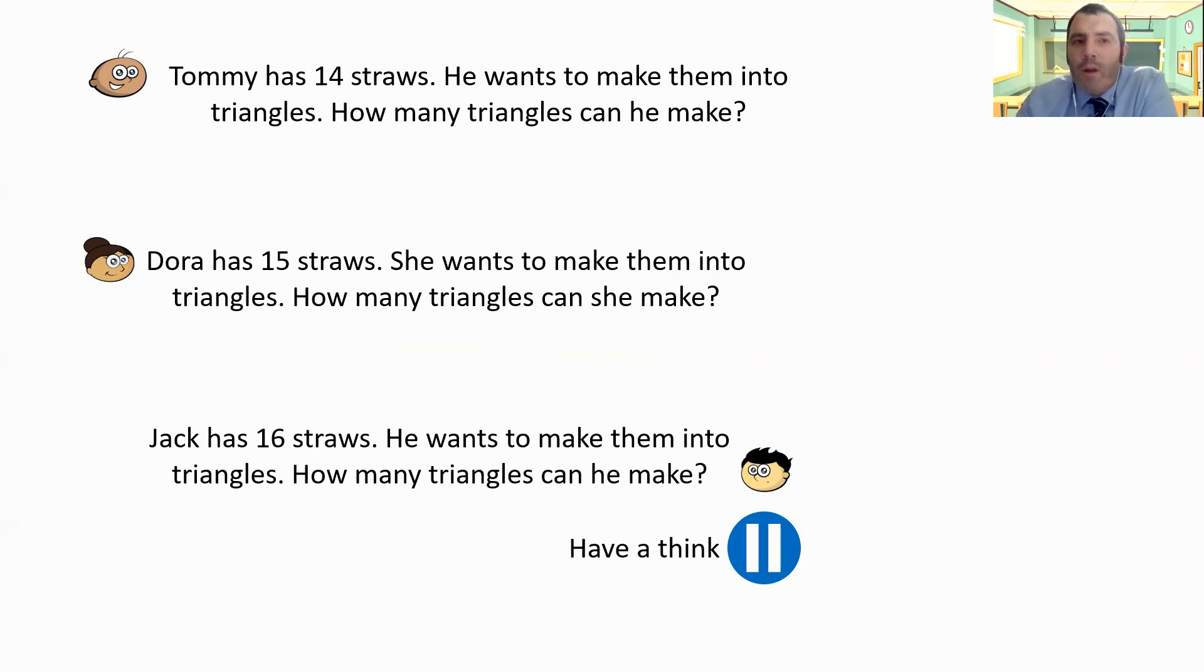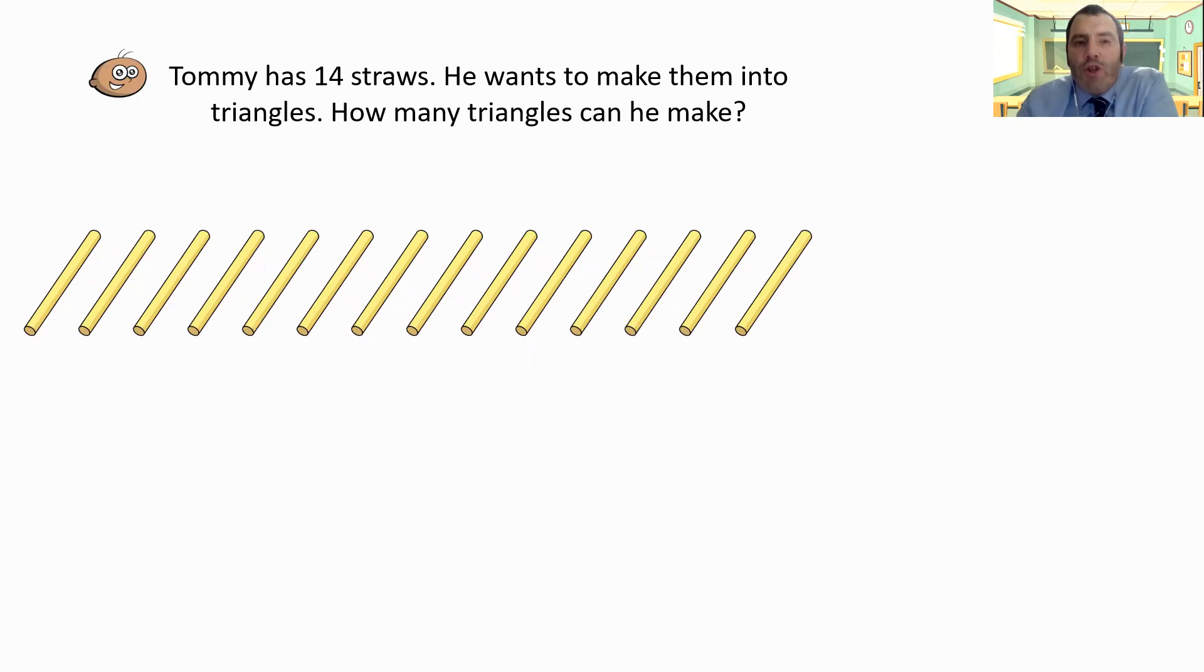How did we get on? So we know what? We know that we're dividing all of these by three. Well done. So my first one, Tommy has got 14 straws and he wants to make triangles. So again, we're going to take 14 divided by three out of this as our question.